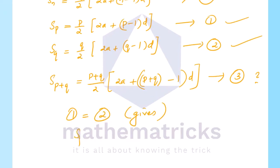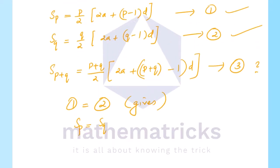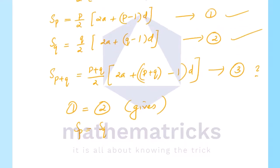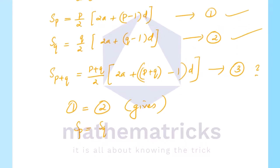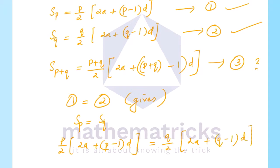Setting Sp equal to Sq — equation 1 equals equation 2: p/2 into (2a + (p-1)d) equals q/2 into (2a + (q-1)d).